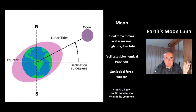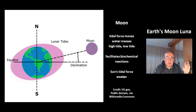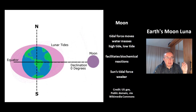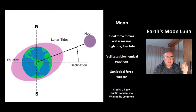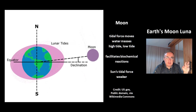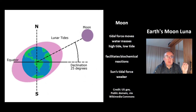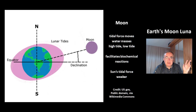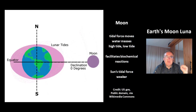One important feature of the Moon is its tidal force, which moves the water masses — producing high tide and low tide. This is very important for life because it facilitates biochemical reactions. There is another tidal force from the Sun, but its tidal force is weaker.